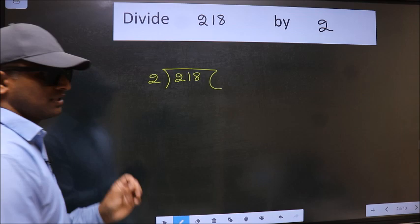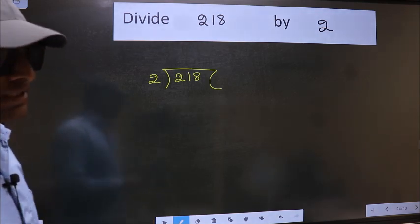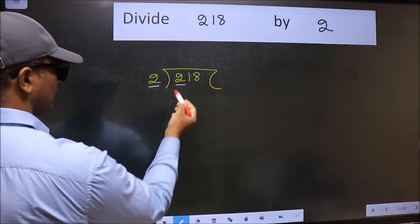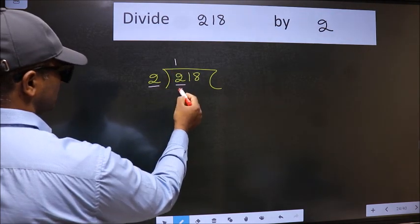This is your step 1. Next, here we have 2. Here also 2. When do we get 2 in 2 table? 2 1s, 2.